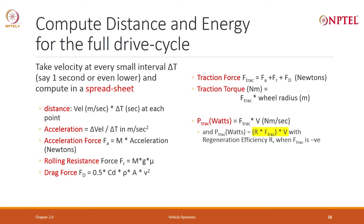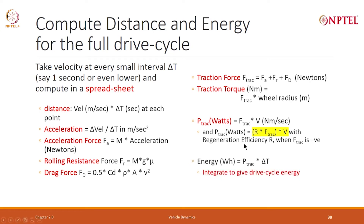If there is deceleration, the traction force will be negative. In that case, you apply a regeneration factor r: power = r × F_traction × V, where r = 1 during acceleration and r = 0.3 (or some chosen value) during deceleration, since the traction power will be negative and you are recovering energy.